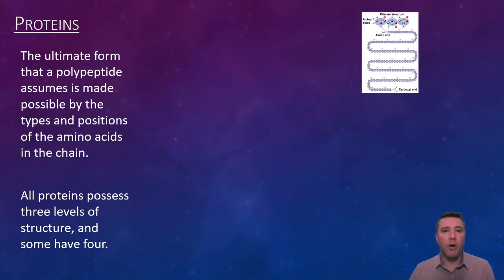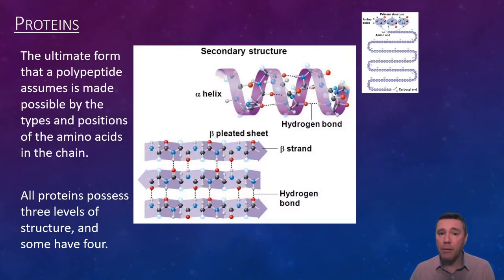Secondary structure involves the formation of hydrogen bonds between different regions of the backbone of the polypeptide chain. These hydrogen bonds cause some regions of the polypeptide to form a corkscrew-like shape called an alpha helix, while other regions form zigzag structures called beta-pleated sheets. Depending on the length of the polypeptide, there could be numerous alpha helices and beta-pleated sheets that form.